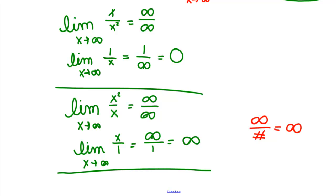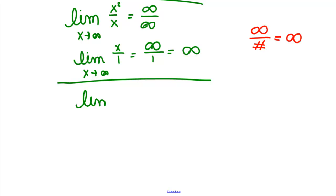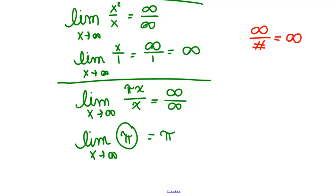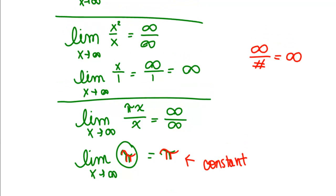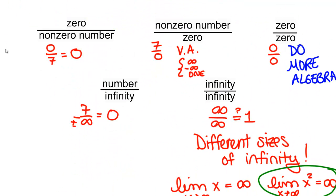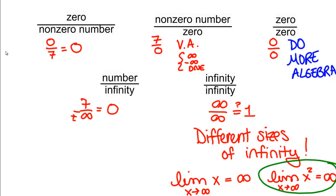But we can even have infinity over infinity limits that give us a fixed number. Something like pi X divided by X. That's infinity over infinity, but when you simplify it, it's just pi. Pi is a constant, so it doesn't change no matter what we do to X.